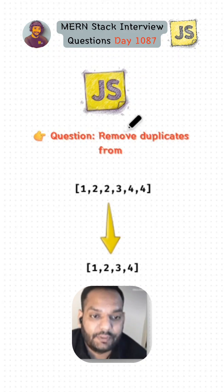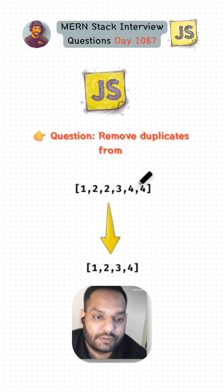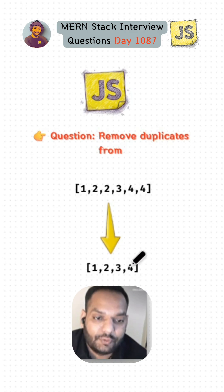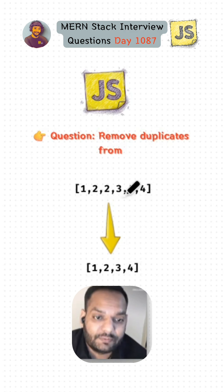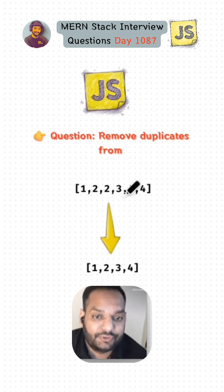How can we remove duplicates from a given array using JavaScript? Sometimes interviewers give us this type of array and ask us to remove all the duplicate values from it. If you know the answer, mention it in the comment section. Now let's try to solve this question together.